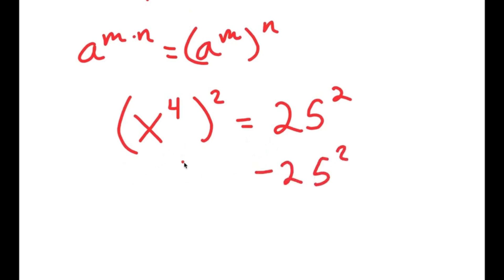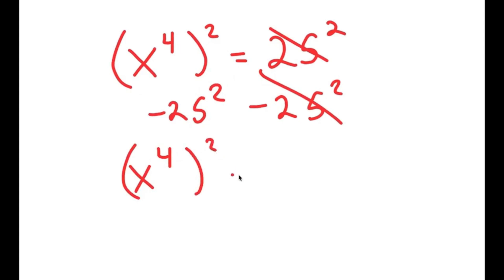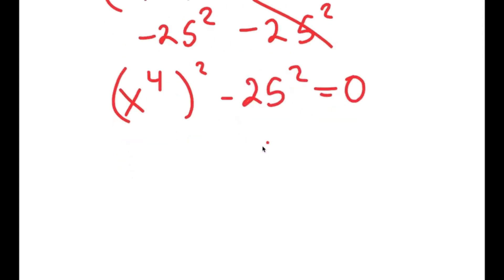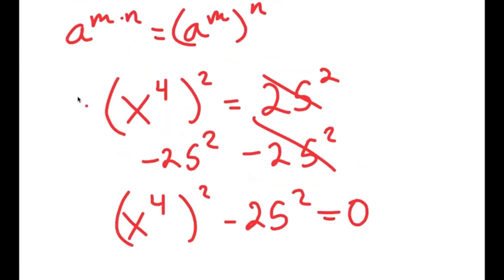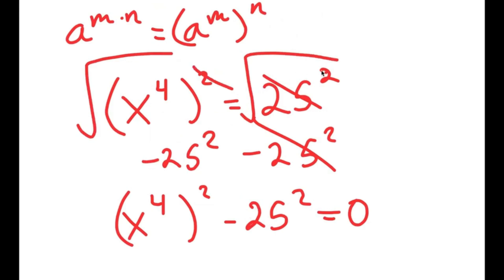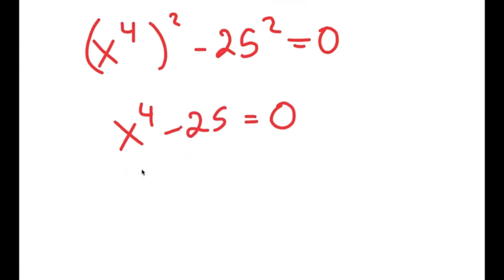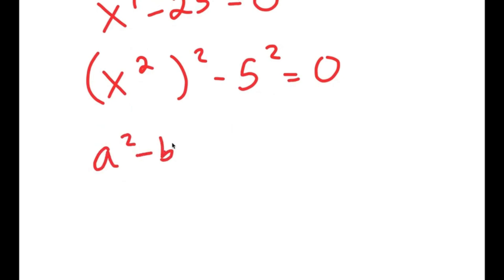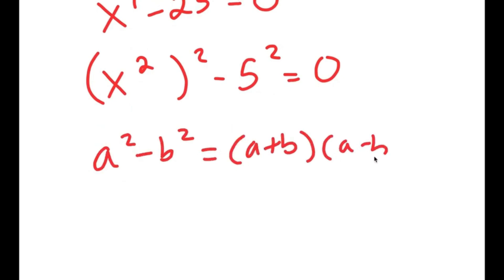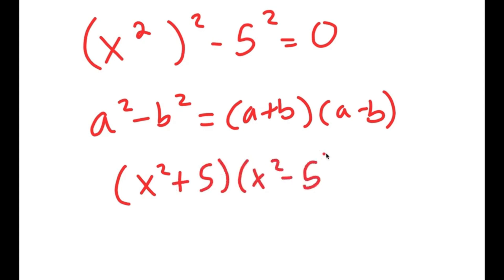I'm going to subtract 25 squared on both sides so these cancel, and I get x to the power of 4 to the power of 2 minus 25 squared is equal to 0. Before doing this, I'm actually going to take the square root on both sides, which gives x to the power of 4 minus 25 equals 0. Now I write this as x squared to the power of 2 minus 5 squared equals 0, so I can use the formula a squared minus b squared equals a plus b times a minus b, giving x squared plus 5 times x squared minus 5 equals 0.